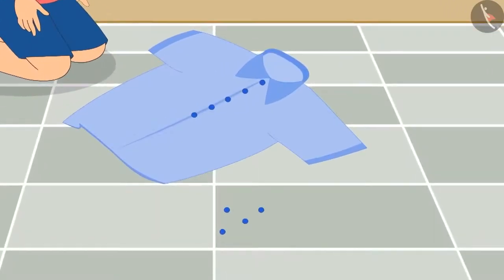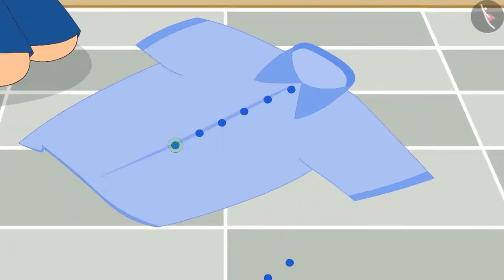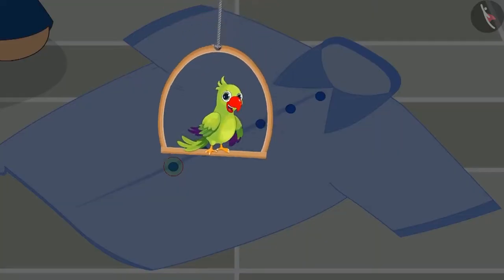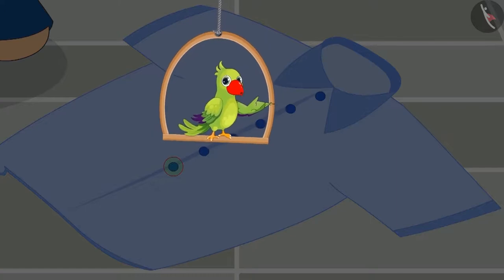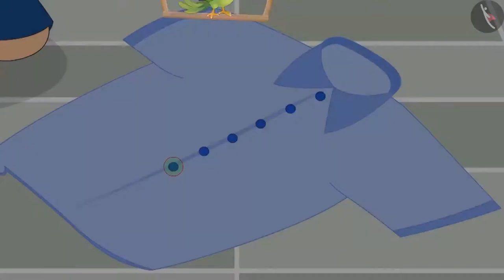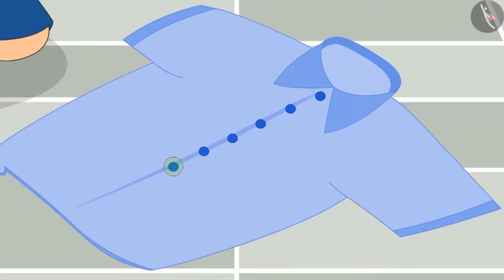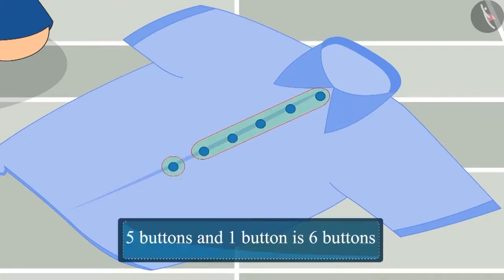Through hard work, Chutu stitched one more button after five buttons. Now, think and answer: how many buttons are stitched on Chutu's shirt? Yes, you are correct. Five buttons and one button - there are a total of six buttons stitched on Chutu's shirt.